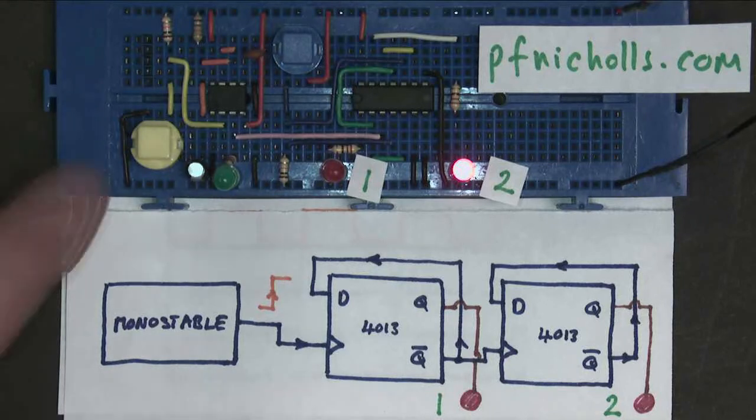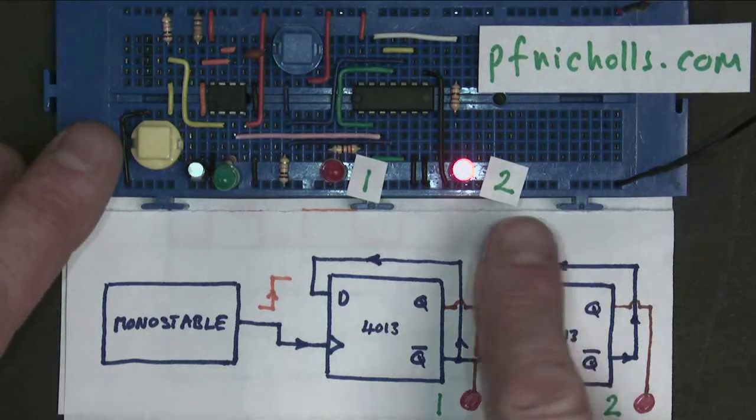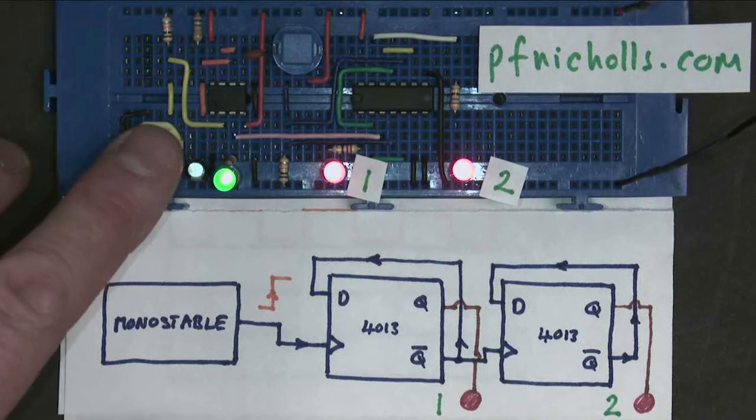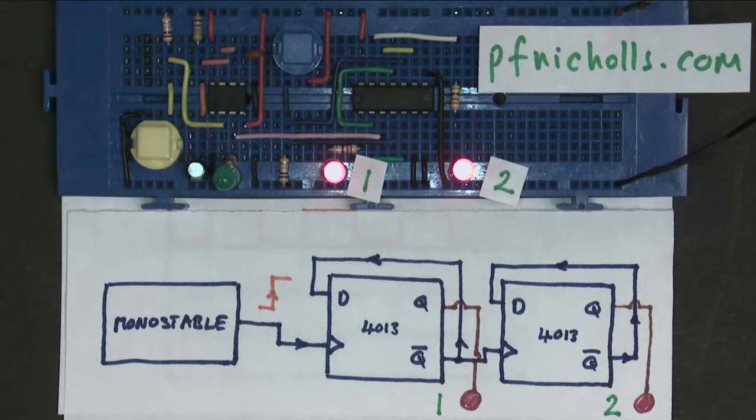And if I press the button again, that will be the third time, which of course is made up of two plus one. So that represents the number three in binary.